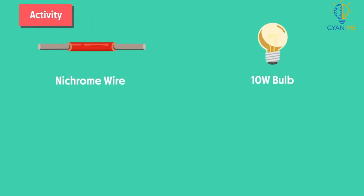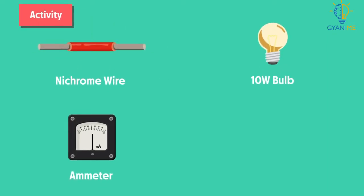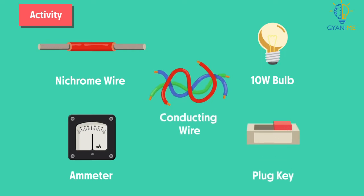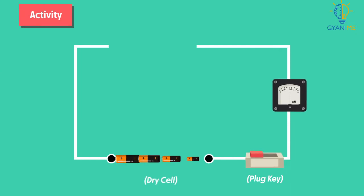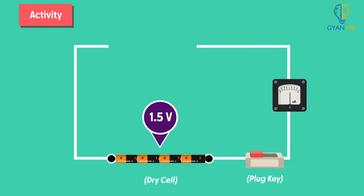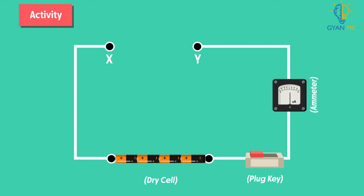a 10 watt bulb, an ammeter, a plug key, and some conducting wire. We set up the circuit by connecting 4 dry cells of 1.5V each in series with the ammeter, leaving a gap in the circuit. Then we complete the circuit by connecting the nichrome wire in the gap and plug the key.